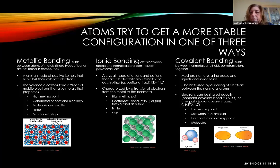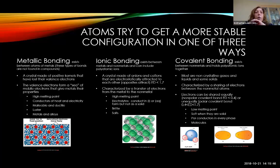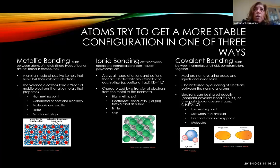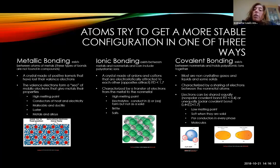Finally, we have covalent bonding, which exists between nonmetals. Covalent bonding is what holds polyatomic ions together. Ionically bonded substances are called salts; covalently bonded substances are called molecules. When you see the word molecule in a question, it is always about a covalently bonded substance. Most covalently bonded substances are noncrystalline — many are gases and liquids, and if they're solids they will be soft.